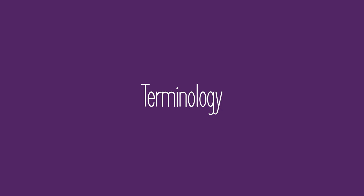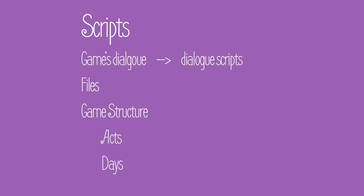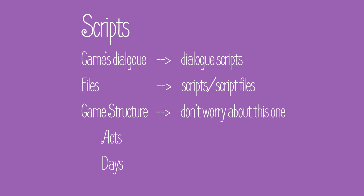I'm going to explain some of the terminology I'll be using for this tutorial. The first term is scripts, which has three meanings in mod making. The first is for the dialogue itself — just like in theater or movies, all the dialogue in the mod is called the script. The second is for the files themselves — each .rpy file is called a script. Third is for the structure of the game, which is created in the script.rpy file. To avoid confusion, I will call the dialogue 'dialogue scripts,' the files 'scripts' or 'script files,' and I will avoid calling the story structure 'scripts' at all.